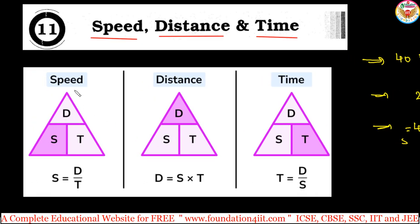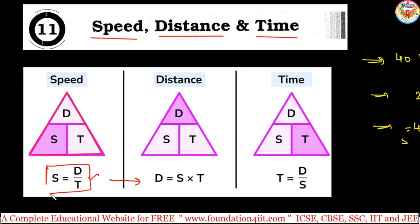Speed is equal to distance divided by time. To remember this easily, use the pattern D-S-T: D is on top, S and T are below. So speed equals D divided by ST — that is, distance divided by time. From this same pattern, distance equals speed into time, and time equals distance divided by speed.